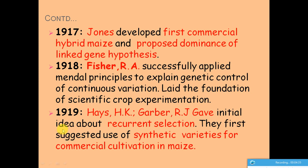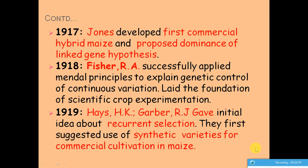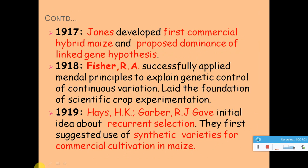In 1919, H.K. Hayes and R.J. Garber proposed the initial idea for a recurrent selection outcome. They first suggested synthetic varieties as a method of commercial cultivation. This concludes our discussion of the key achievements of the Mendelian Era of plant breeding.